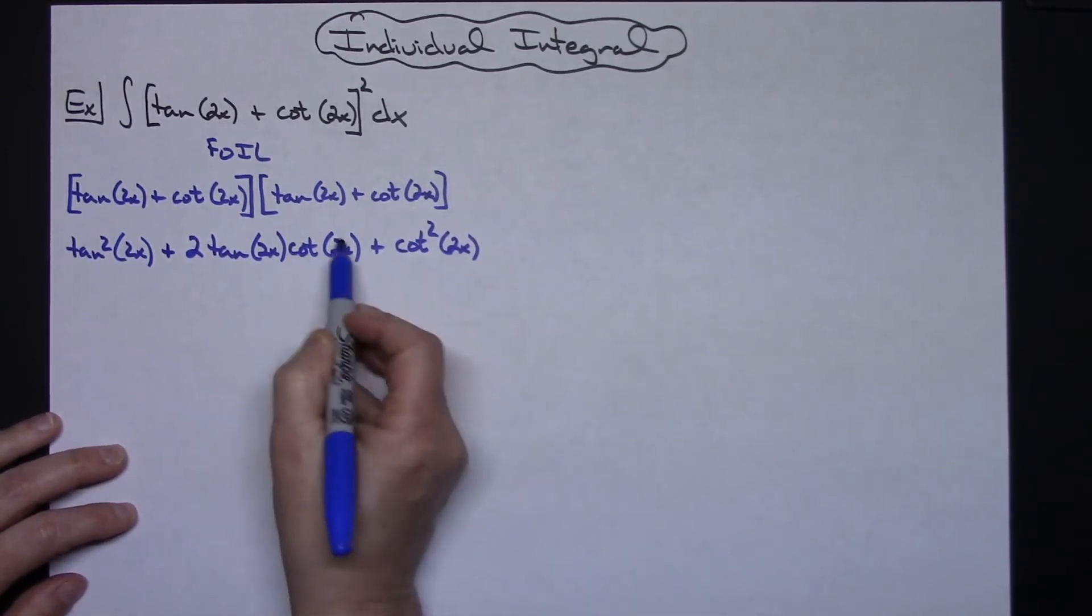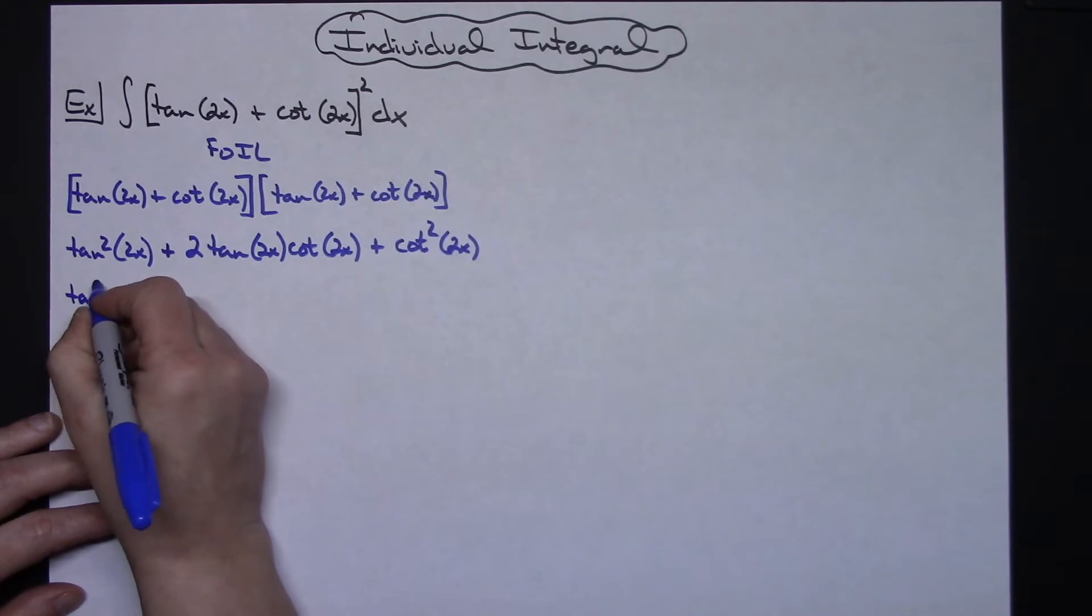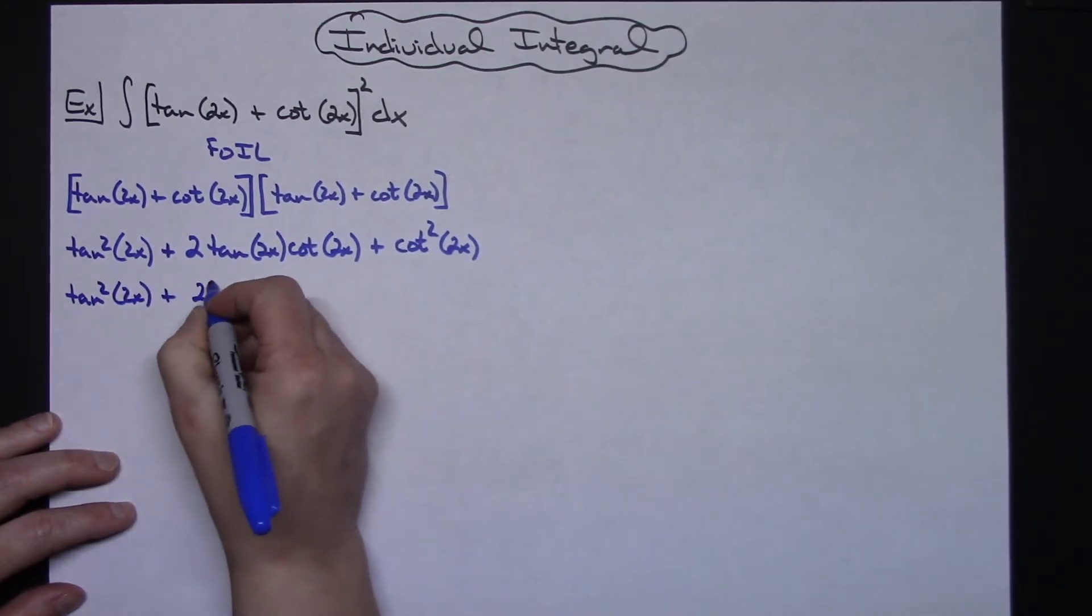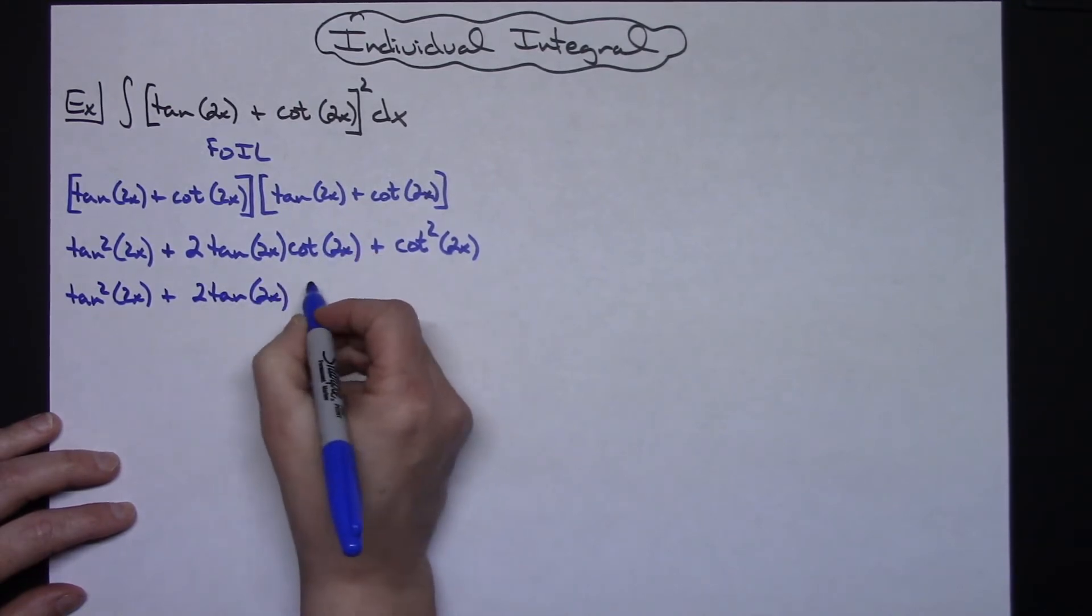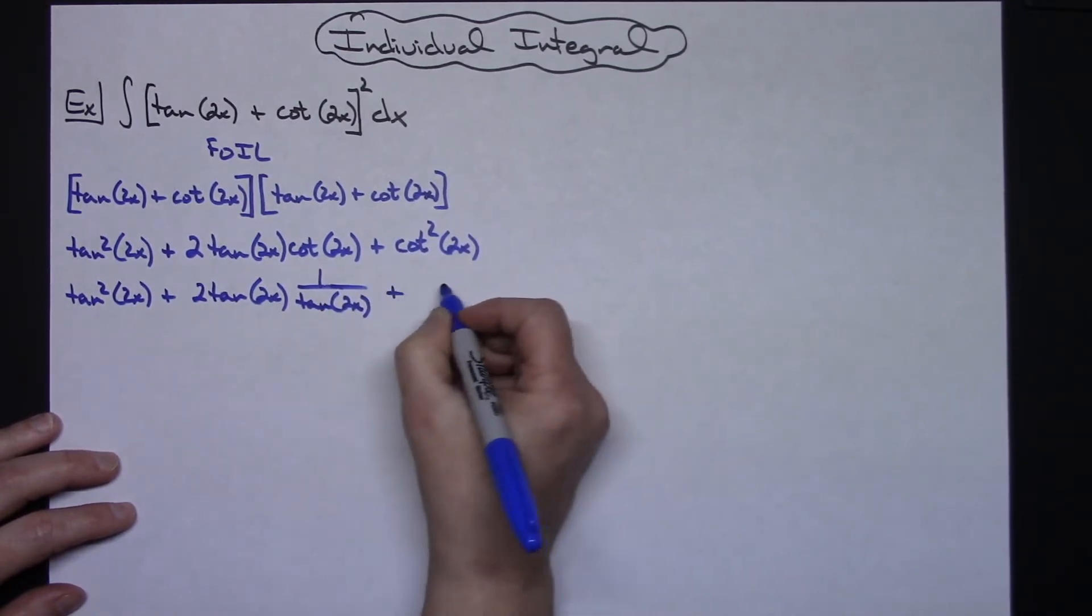Alright, now in this center one I'm going to replace this with its reciprocal identity so that we can get some things to cross out. So leaving the first term alone tangent squared of 2x plus 2 tangent of that 2x. Now replacing this with the reciprocal identity of 1 over tangent of 2x, that's going to allow us to do some crossing out right there.